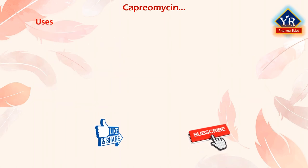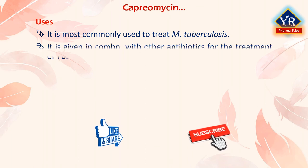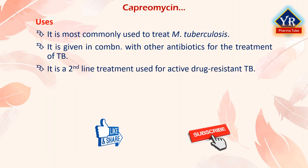Uses of capreomycin: Capreomycin is most commonly used to treat Mycobacterium tuberculosis infections. Mycobacterium tuberculosis growth has been found to be inhibited at a concentration of 2.5 micrograms per ml. It is given in combination with other antibiotics for the treatment of tuberculosis. Specifically, it is a second-line treatment used for active drug-resistant tuberculosis. In particular, it may be used in place of streptomycin when either the patient is sensitive to or the strain of Mycobacterium tuberculosis is resistant to streptomycin. It is given by injection into a vein or muscle.